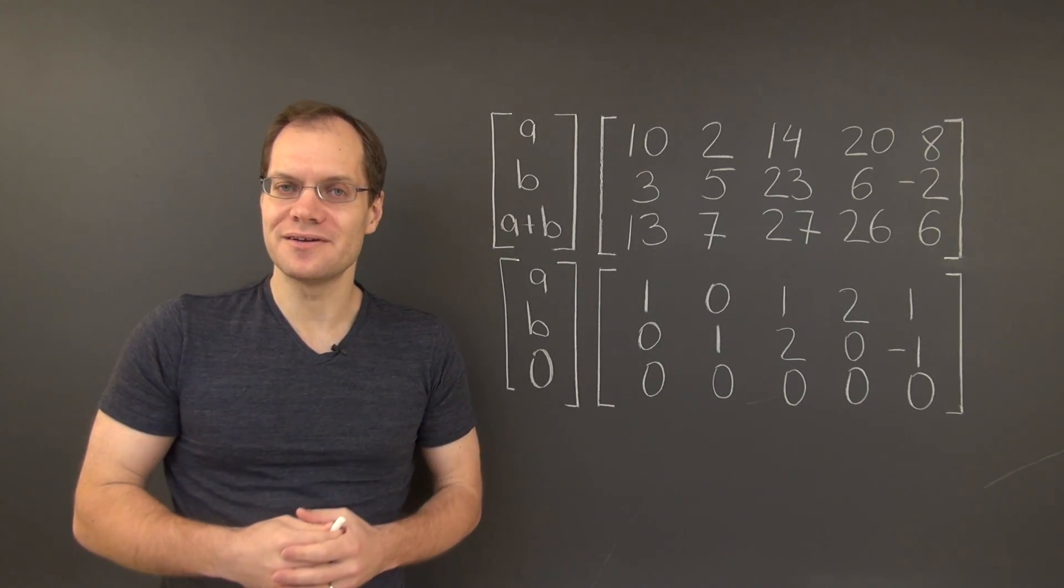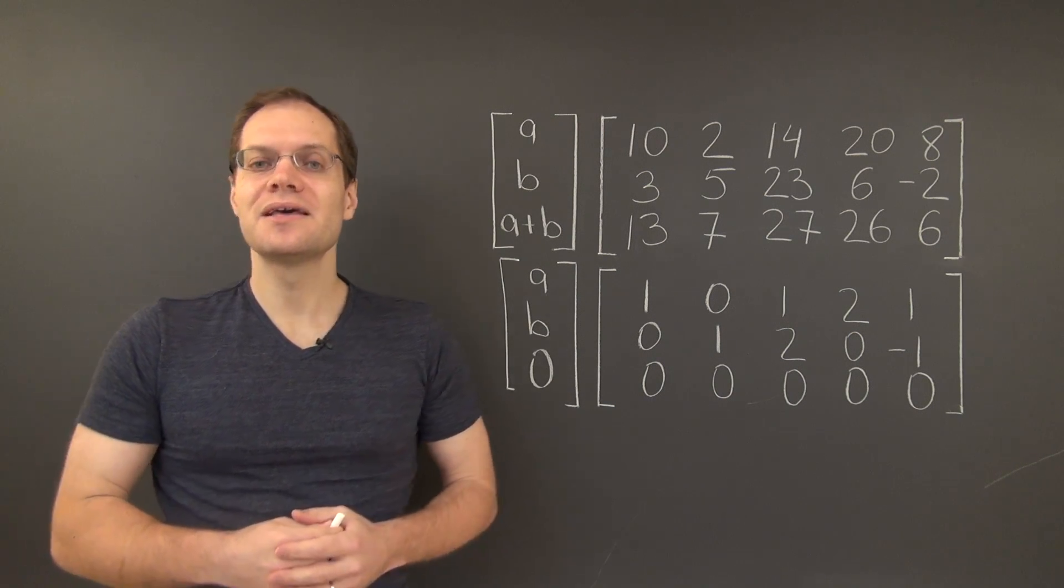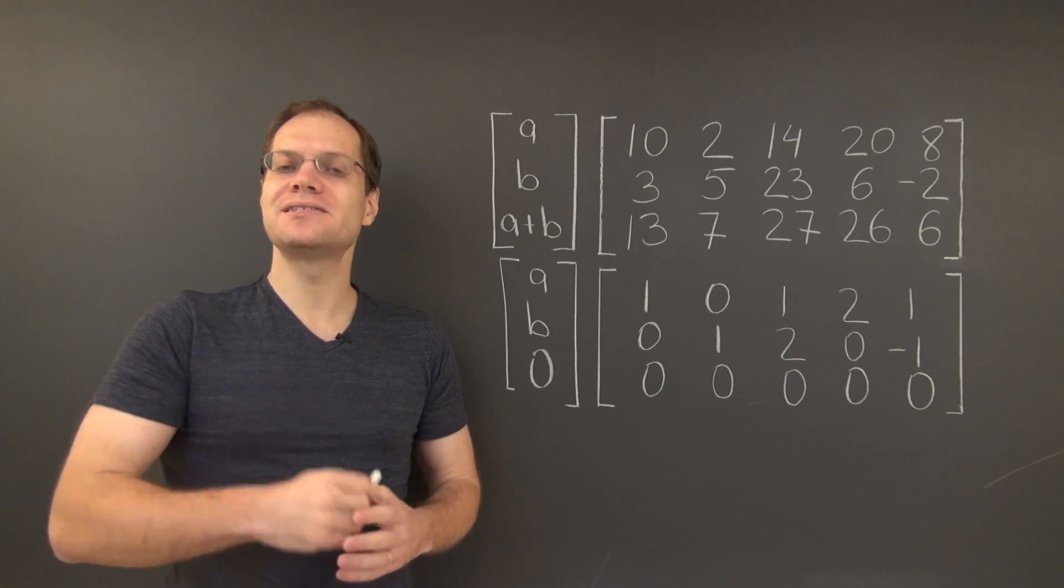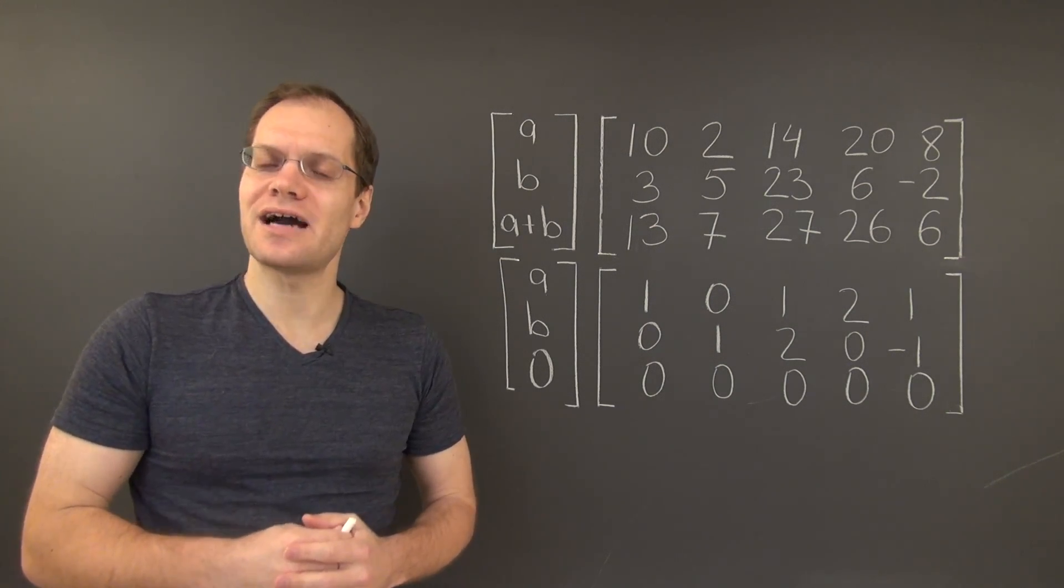So in summary, Gaussian elimination can be used to determine the null space because it doesn't change the null space, but the same doesn't work for the column space.